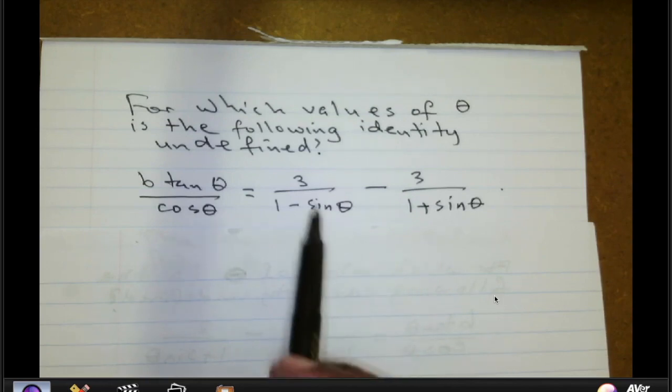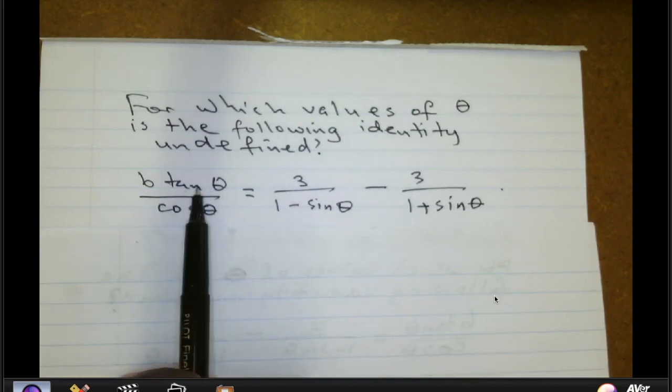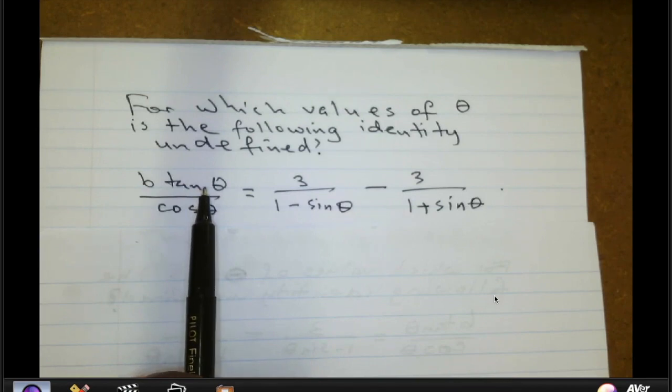I want to start by drawing your attention to tan of theta. Remember the graph of tan theta has an asymptote when theta is 90 degrees.